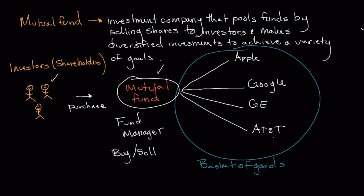Every mutual fund has a stated goal and objective. You can order what are called prospectuses, which give you detailed information on a mutual fund. Nowadays you can also go online and view a lot of this information, which will tell you about the goals and objectives so you can determine if that mutual fund aligns with your personal investment goals and whether it's something you'd want to purchase.